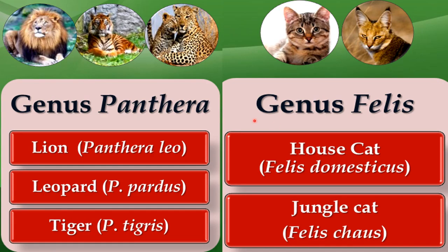Another example: genus Panthera includes lion, tiger, and leopard — lion is Panthera leo, leopard is Panthera pardus, and tiger is Panthera tigris. These are different species under the same genus Panthera. Likewise, genus Felis includes jungle cat (Felis chaus) and house cat (Felis domesticus) — both are different species under the same genus Felis.